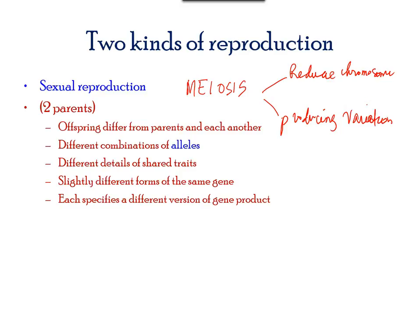Alleles are characteristics of genes present in the chromosome. They share traits. Meiosis helps to rearrange and remake the traits, thus producing slight variation from parent to offspring.